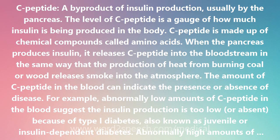C-peptide is made up of chemical compounds called amino acids. When the pancreas produces insulin, it releases C-peptide into the bloodstream in the same way that the production of heat from burning coal or wood releases smoke into the atmosphere. The amount of C-peptide in the blood can indicate the presence or absence of disease.